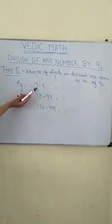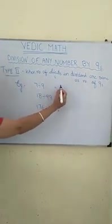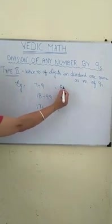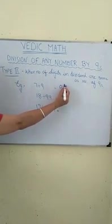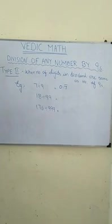The digit, the number is 7. So your answer is 0.7 with a bar. Of course, we always write the bar at the top. That is the answer.